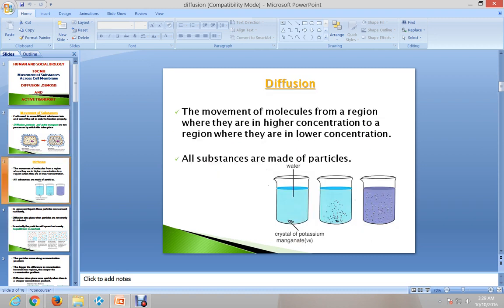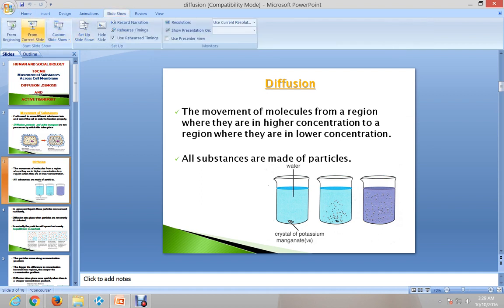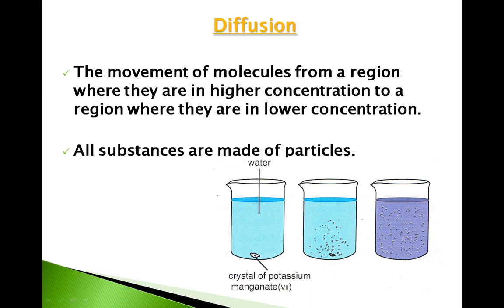The principle that governs diffusion is the movement of molecules — sometimes called particles or substances — from a region where they are in higher concentration to a region where they are in lower concentration. Higher concentration basically means a place where there is a lot of that particular substance, gas, or particle. Looking at the diagram here, this region would be the place of higher concentration for this particular crystal, which is known as potassium.